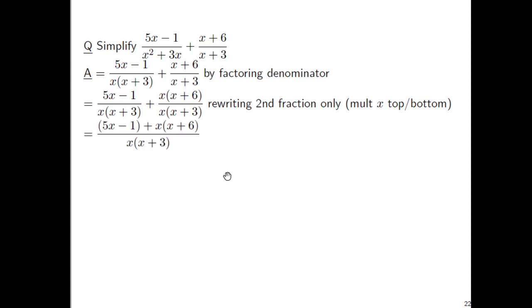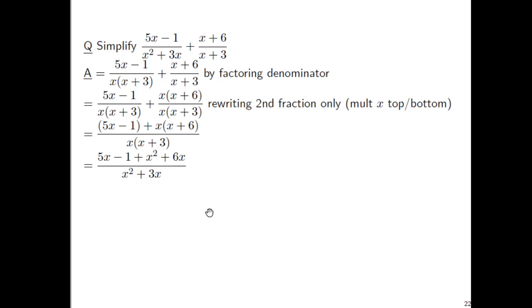Both fractions have an (x+3) factor in the denominator, but the second fraction is missing an x factor. So multiply the second fraction by x on top and bottom — the first fraction stays unchanged. Now with a common denominator, combine into one fraction. Drop the parentheses around 5x−1, distribute x to get x²+6x, and collect like terms: x²+11x−1 over x²+3x. It's tempting to cancel x² on top and bottom, but the plus signs prevent that.